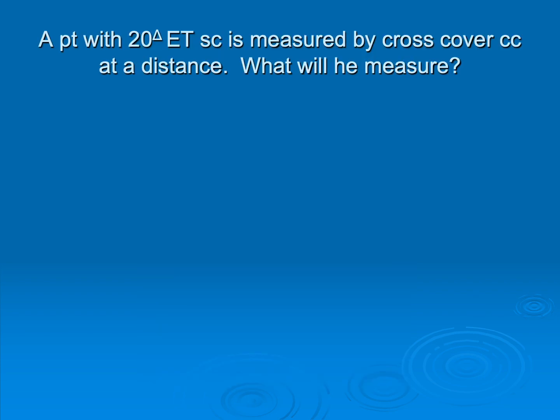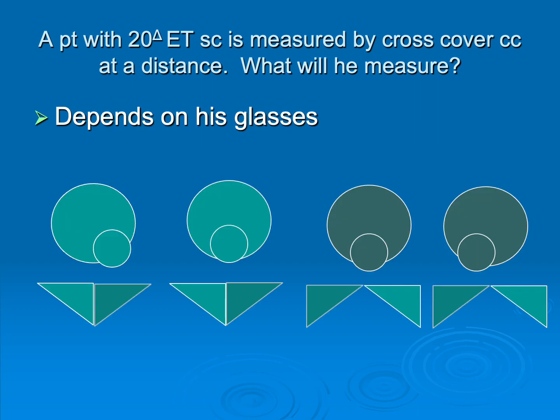To wrap up today's lecture, I'm going to talk about something that's clinically useful for you. Let's say we have a patient that we know is 20 ET, and this is measured without correction. But we're going to now measure them with their glasses on. And my question to you is, will they measure 20 ET? Will they measure more than 20? Or will they measure less than 20? The answer is, it depends on the glasses. Before I get into that, I want to tell you, if you don't know already, that when someone fixates with one of their eyes and they have strabismus, the entire deviation is taken up by the non-fixating eye.